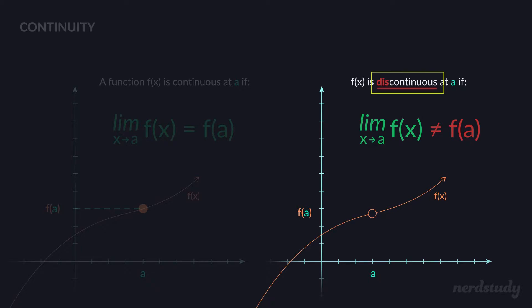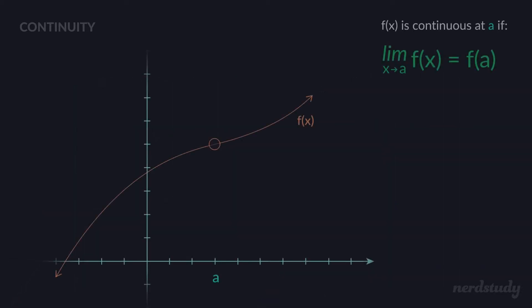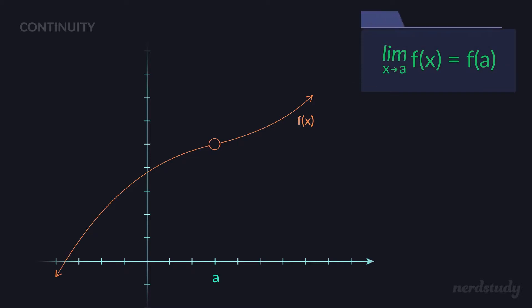So we touched upon this earlier, but let's think about it once more. If you have a graph like this one, can you say that this graph is continuous at the number a, where x equals a? Well, you cannot. The reason why is that while the limit as x approaches a does exist — since as x approaches a from both sides it does seem to be approaching the same value — the question is: does that limit equal f(a)?